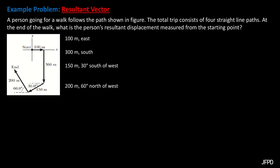At the end of the walk, what is the person's resultant displacement measured from the starting point? This given vector diagram represents a displacement of 100 meters to the east, then followed by 300 meters to the south.